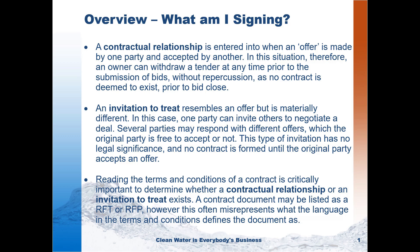The most important thing for a contractor to understand is the legal difference between a contractual relationship and an invitation to treat. A contractual relationship is your typical tender process, or when Contract A and Contract B applies. It's entered into when an offer is made by one party and accepted by the other. Your Contract A is the bidding contract, which arises when a bidder submits a bid to an owner's project call. The tender call is the offer in this situation, and the submission of a bid consistent with the terms of the tender is the acceptance.